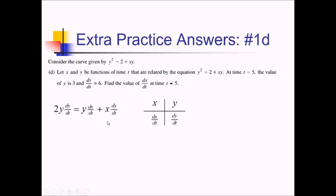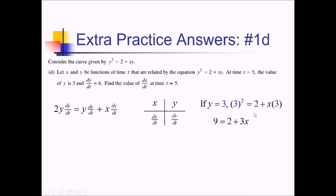Now it's time to plug in and solve for what we're missing — dx over dt. We have y and dy over dt, but they didn't tell us x. We need to know x at time 5. Since y equals 3 at time 5, we can plug into the original equation: 3 squared equals 2 plus x times 3, giving 9 equals 2 plus 3x, and solving gives x equals 7 thirds.